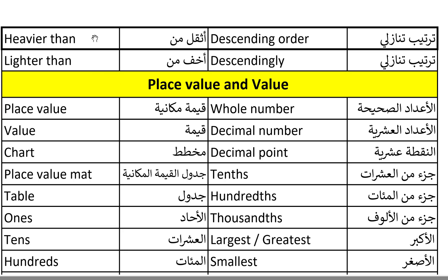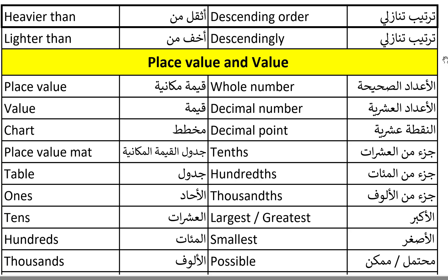Heavier than. Heavier than. Lighter than. Lighter than. And on the right side: descending order. Descending order. Descendingly. Descendingly. Excellent, good job. Let's continue.